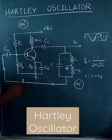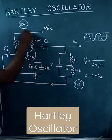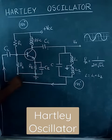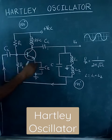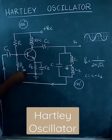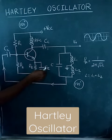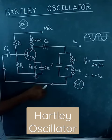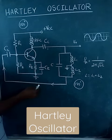Hartley oscillator. This is a transistor amplifier where voltage divider biasing is used. R1, R2, and Re are the emitter resistance components. CE is the bypass capacitor used to improve the AC gain.